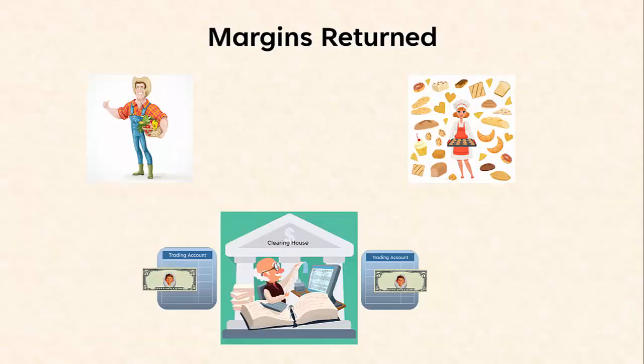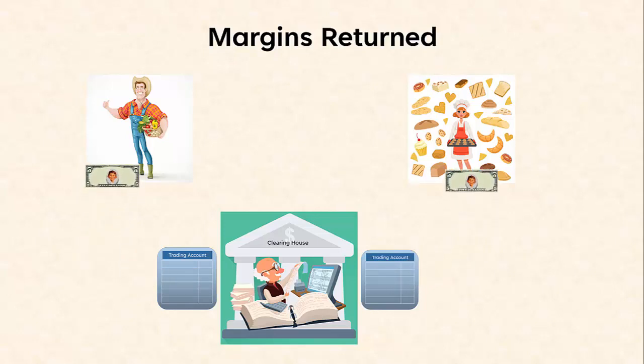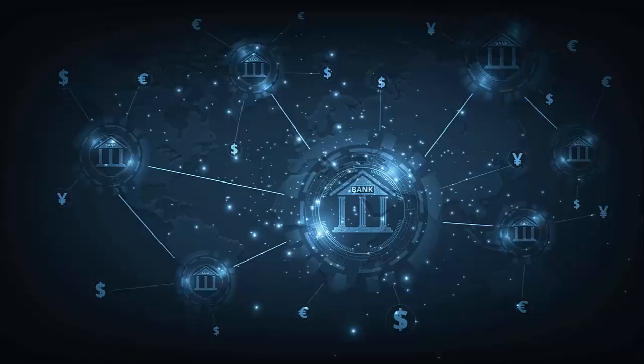Because there's been no default, the initial margins are returned to the respective traders. So, with this example, we can understand the role played by the central Clearinghouse. It acts like a central bank between the various traders, administering the various cash flows on a day-to-day basis, and it orchestrates settlement at the end of the life of the futures contract. In another presentation, we'll look at an additional benefit of the Clearinghouse, which is that it allows traders to exit a futures position before maturity using an offset trade.